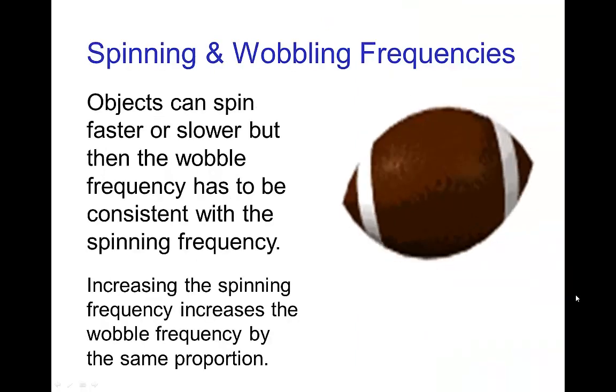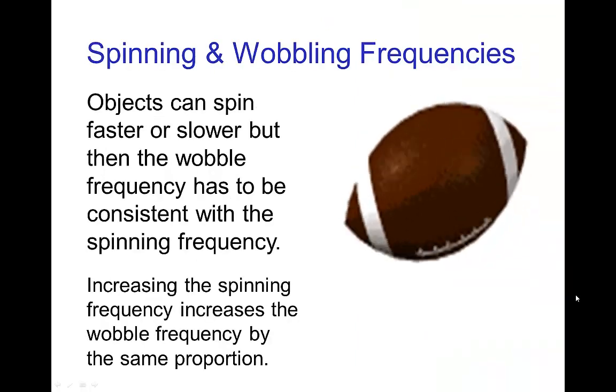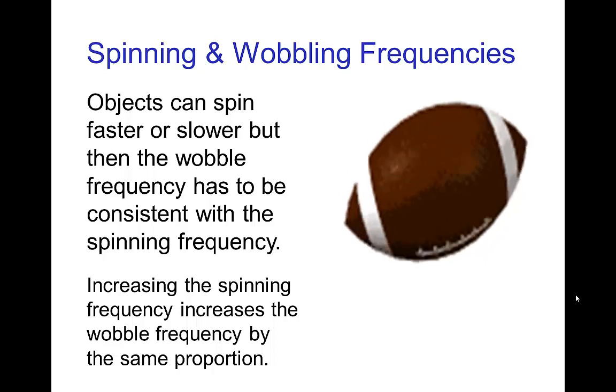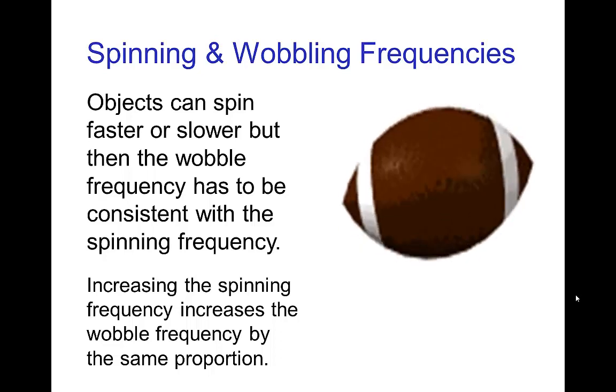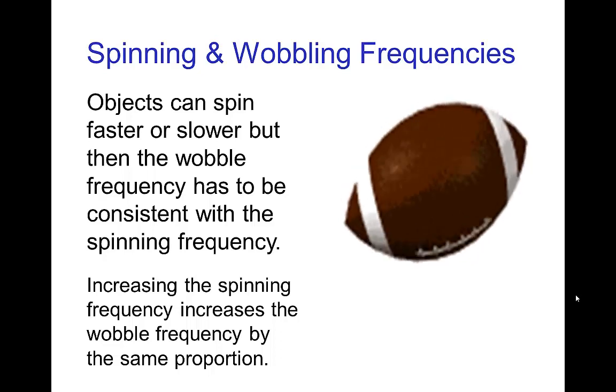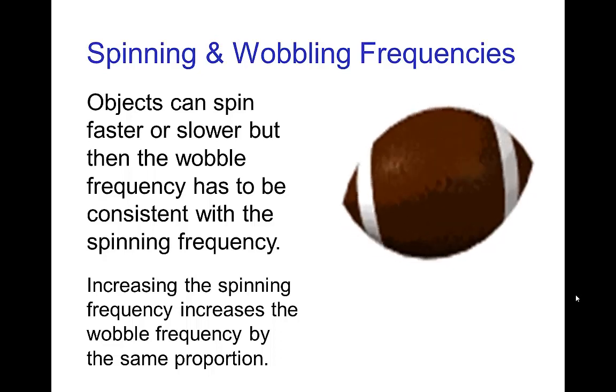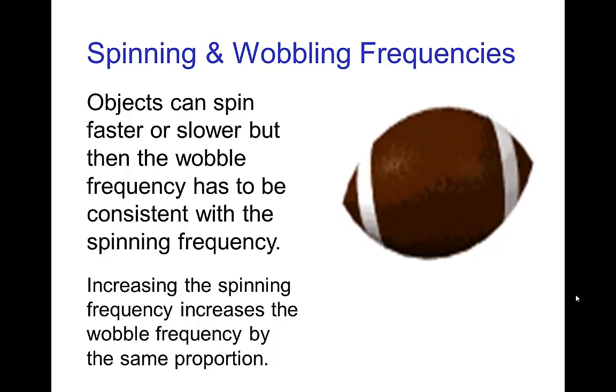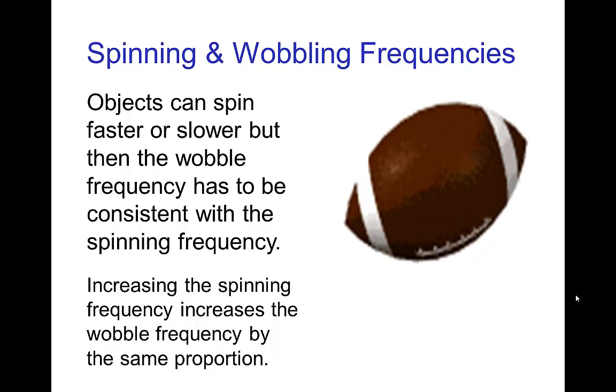Now when something is spinning and a symmetric object like the plate or the football, when spinning and wobbling, you can spin the football faster or you can spin it slower, but in all cases the ratio of the number of spin rotations to the number of wobble oscillations always stays in the same ratio depending on the shape of the object.